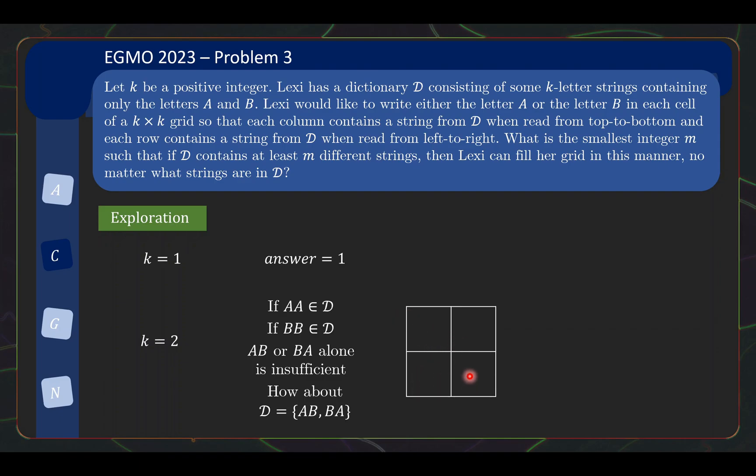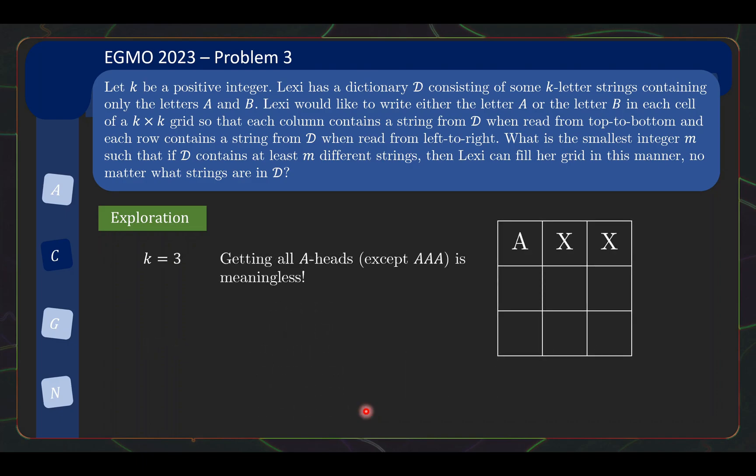So in this case it turns out that the answer is equal to 2, simply because if AA or BB is in the dictionary you're done, and if not, then having at least two entries in the dictionary forces it to be AB and BA, which we just argued is enough to fill the grid as well. Now one of the key observations here is that the key observations for k equals 2 will become clearer once we look at k equals 3.